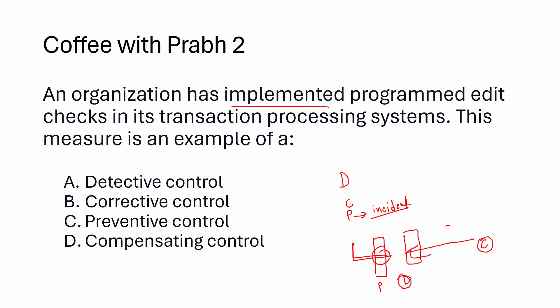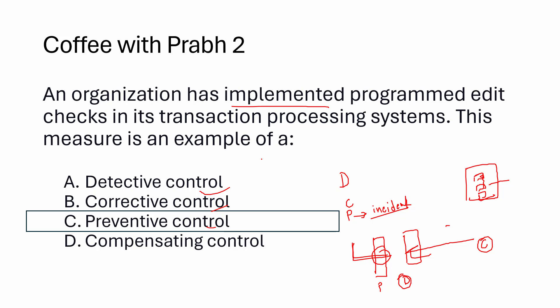In an application with an edit check, you cannot edit that field. For example, on a login page with username, password, and submit — until you fill the username, you cannot click submit. The action was created to prevent. So option A, detective control — no. Corrective control — no, it's not correcting something post-incident. It is a preventive control because the primary goal of an edit check is to make sure no one can enter invalid values. Compensating control comes into play only when detective, corrective, or preventive controls are absent or ineffective. So the answer is C — preventive control.